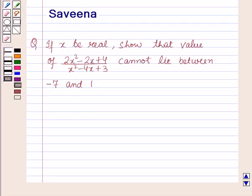Hello and welcome to the session. In this session we will discuss a question which says that if x be real, show that the value of (2x² - 2x + 4) / (x² - 4x + 3) cannot lie between minus 7 and 1.